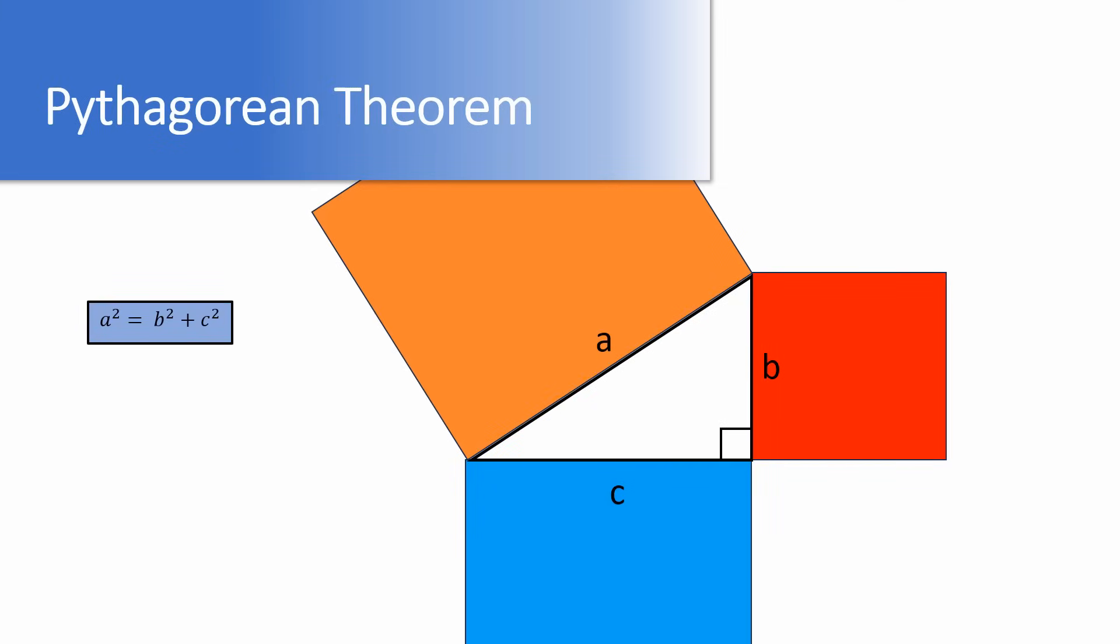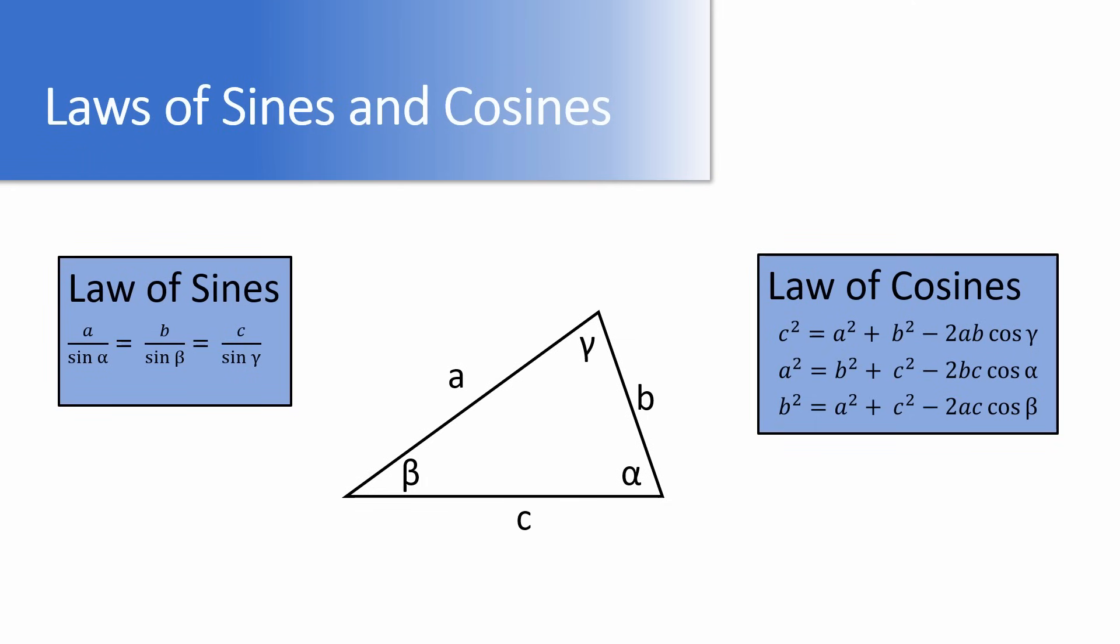In order to calculate the angles of the servos, we're going to brush off our trigonometry. For a refresher, first off is the Pythagorean theorem: A squared equals B squared plus C squared. This is a great formula for calculating the length of a side, but unfortunately it only works on right triangles. Next we have the laws of sines and cosines. These are great for both calculating the length of a side as well as the angles, and they will work on all triangles.